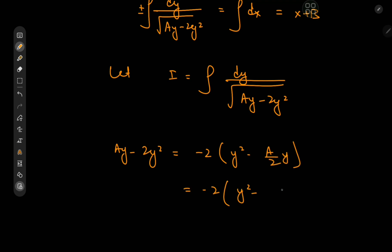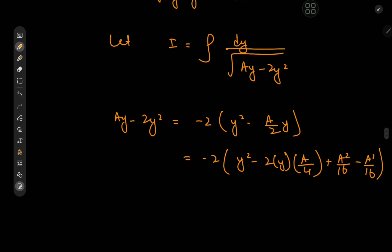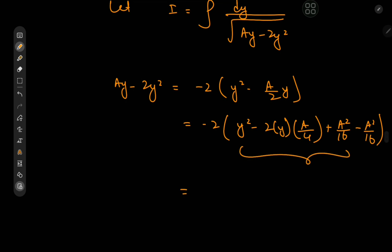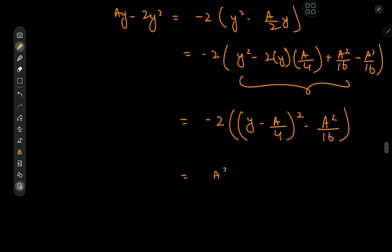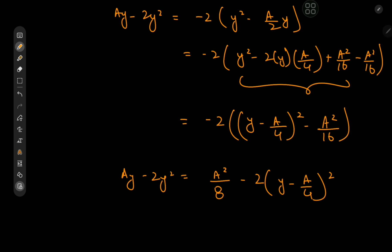We have ay minus 2y², so we factor out negative 2: we get negative 2 times (y² minus (a/2)y). Completing the square, we get negative 2 times [(y minus a/4)² minus a²/16], which gives us a²/8 minus 2(y minus a/4)². So ay minus 2y² equals a²/8 minus 2(y minus a/4)².